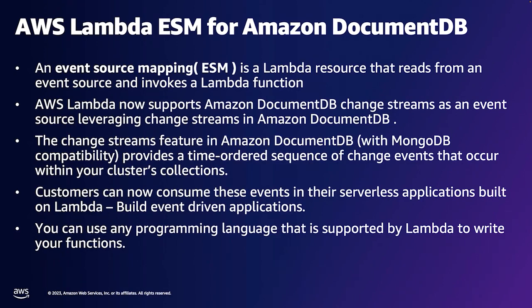What are change streams? Change streams are a time-ordered sequence of change events happening in your database. Any change of data — whether a delete operation, a write operation, or an update operation — all of those are captured in the change streams. With Lambda ESM mapping for change streams, you can build event-driven applications on top of your Amazon DocumentDB data. And you can write your Lambda function in any language that's supported by Lambda.